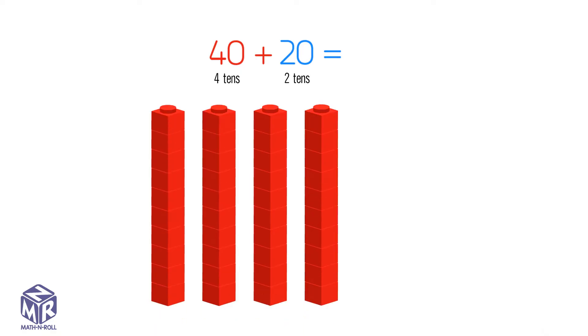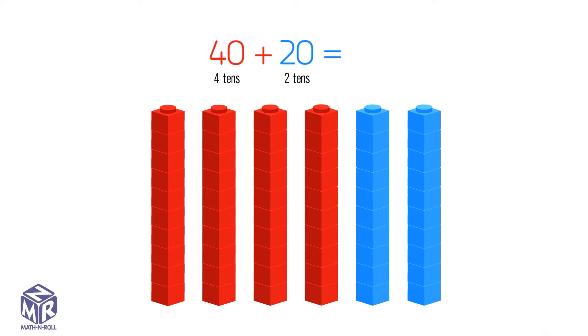Let's try another example. 40 plus 20. 40 has four tens and 20 has two tens. Let's make a model. Add the tens. We get six tens or 60.